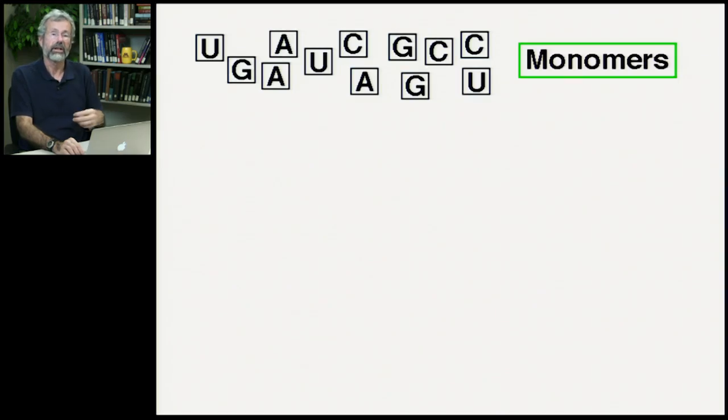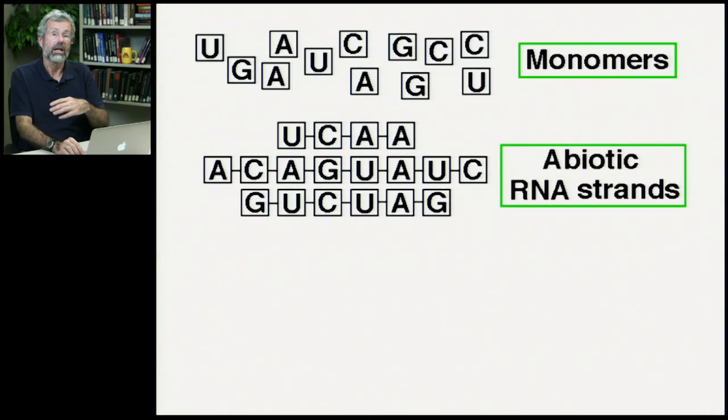So, from the conditions of the early atmosphere, with all the lightning, we get the spontaneous generation of all the monomers. And then, along the clay crystals, there would be unbelievable numbers of strands, of polymers, of what we now call abiotic RNA. They're abiotic because they're not alive, but they are recognizable as RNA.